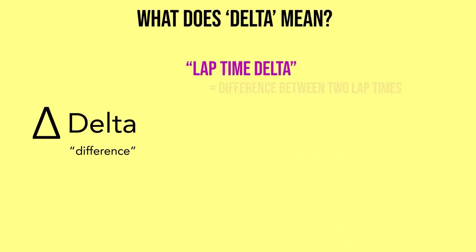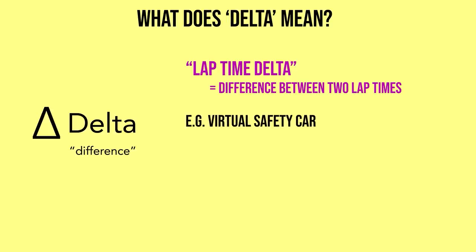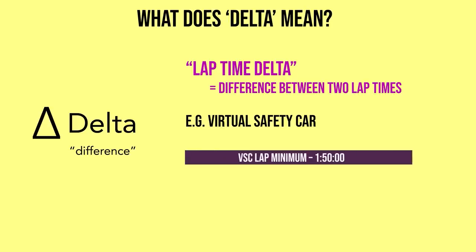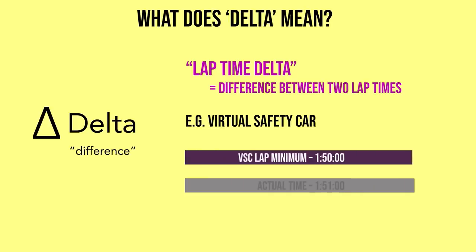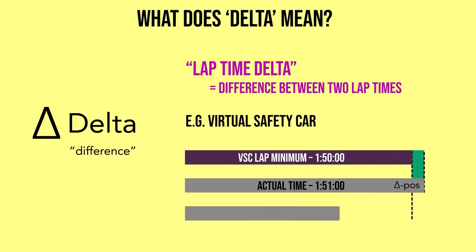You might also think about lap deltas or time deltas. This comes up a lot under virtual safety car conditions where cars have to drive relatively slowly, completing laps at a minimum lap time, measured every mini sector. If the virtual safety car minimum allowed lap time is 1 minute 50 seconds and you complete the lap in 1 minute 51 seconds, then you are delta positive — your time is bigger than the reference time, so the difference is a positive number. If you go too fast, say 1 minute 49 seconds, you're delta negative — your delta is minus 1 second.